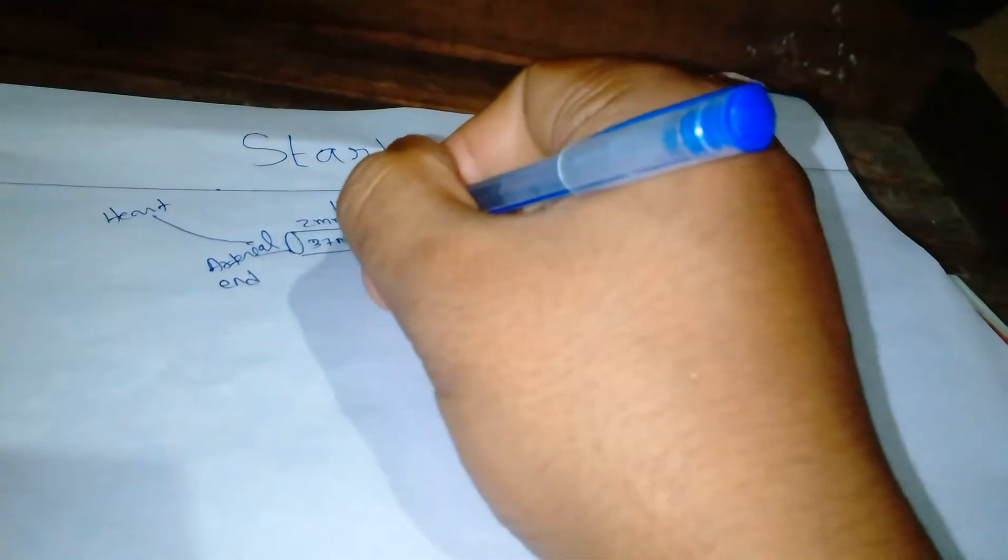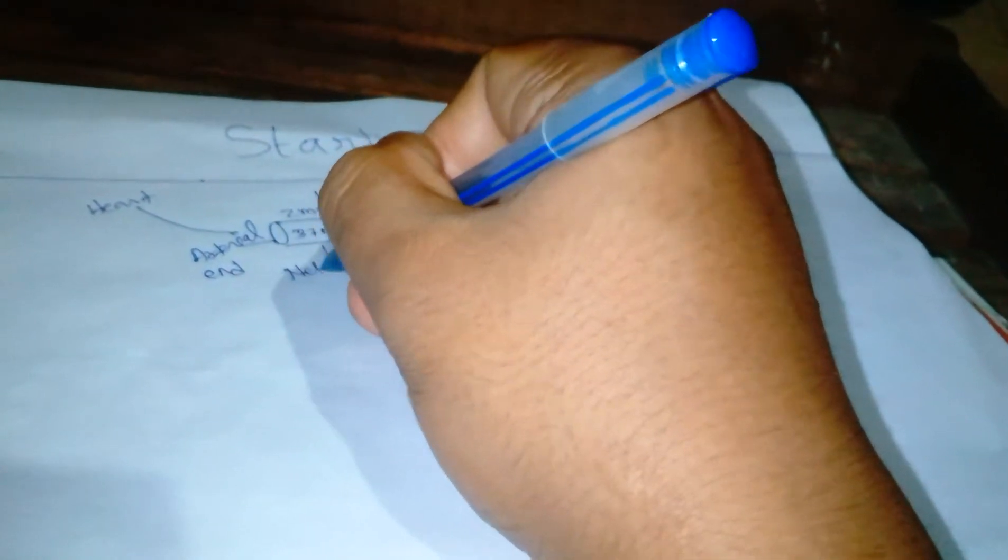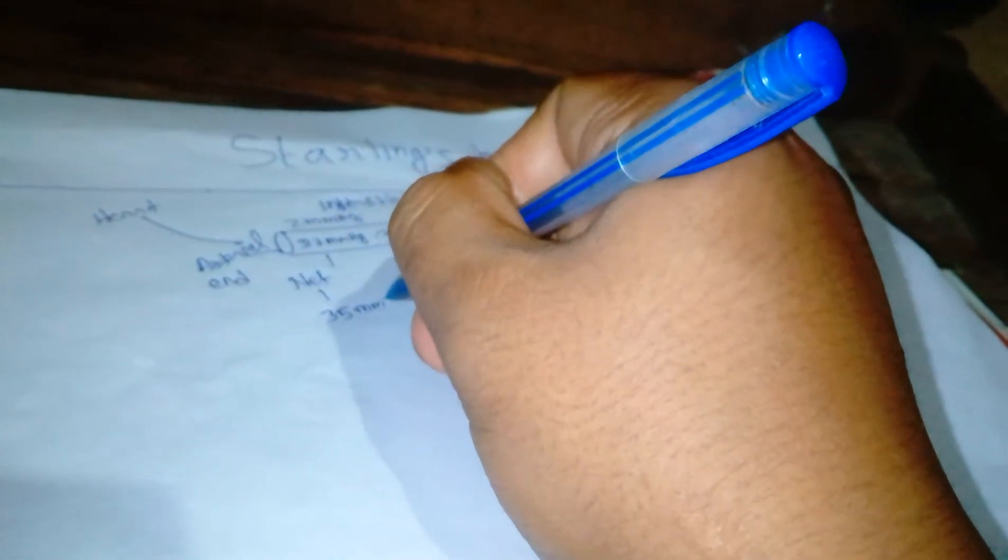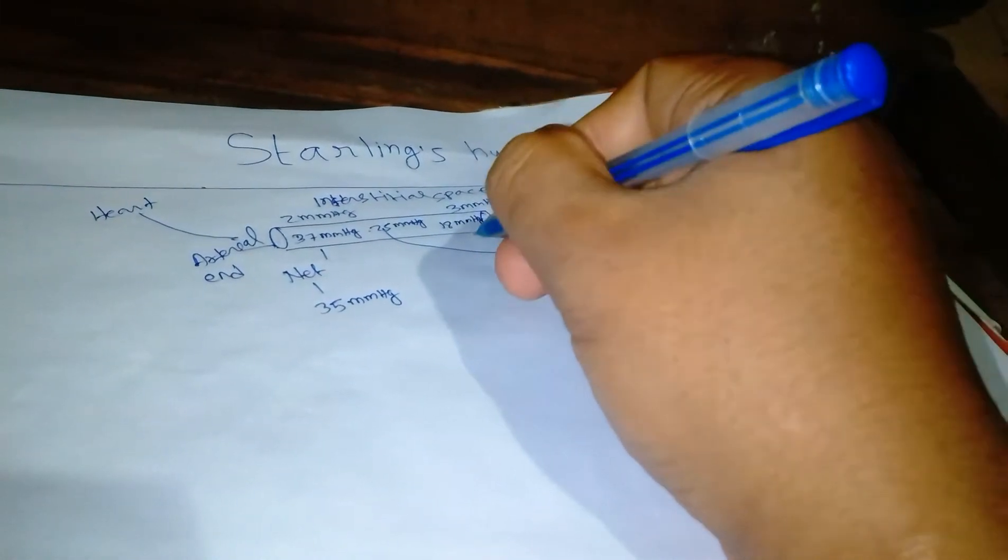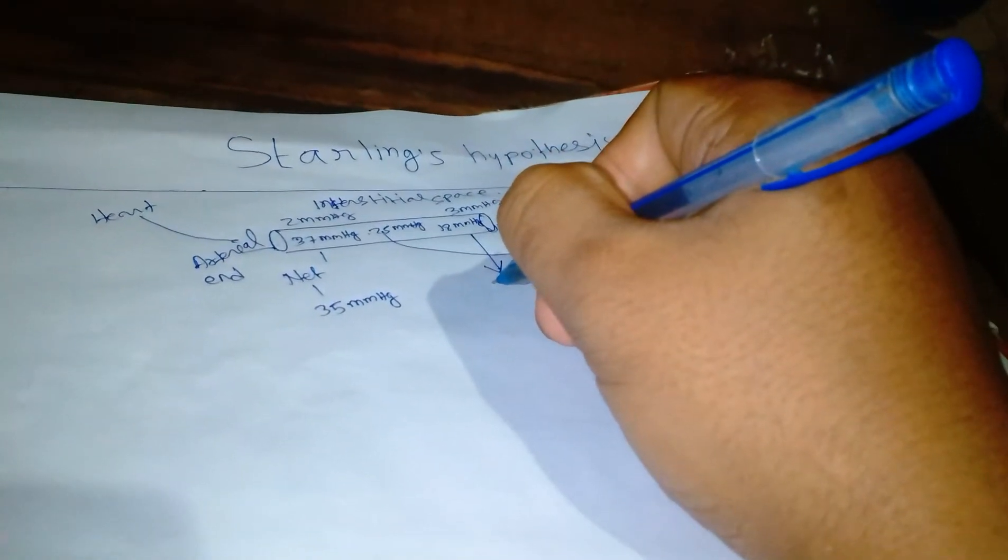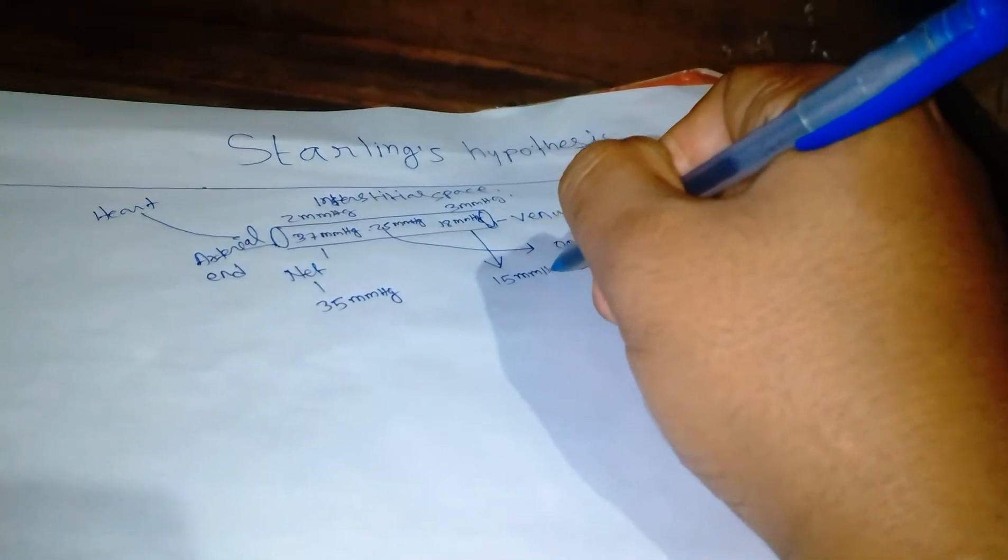So according to the formula, the net hydrostatic pressure is 37 minus 2, that will be 35 mmHg. And here 18 minus 3, that will be the net pressure will be 15 mmHg.